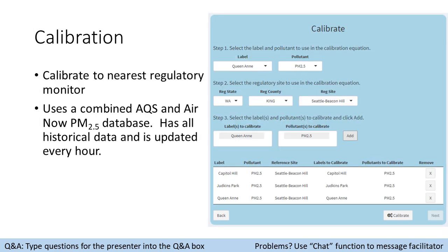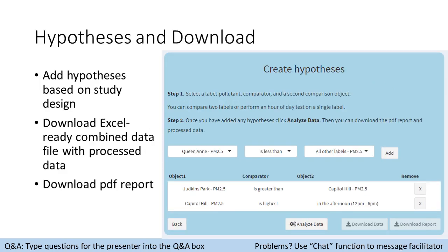Once you've labeled the data, you can calibrate it to the nearest reference site. Then you can create a hypothesis. We try to have people thinking about their use of these sensors to answer their question in at least a semi-scientific way. For example: 'I have a concern about wood smoke during the night time, so my hypothesis is that my PurpleAir is going to be highest at night.' Or: 'I think this one area in my neighborhood has higher concentrations because I see a lot of diesel trucks idling there, so I'm going to walk around my neighborhood, label that area, and compare the two.' That's what the hypothesis section is for.